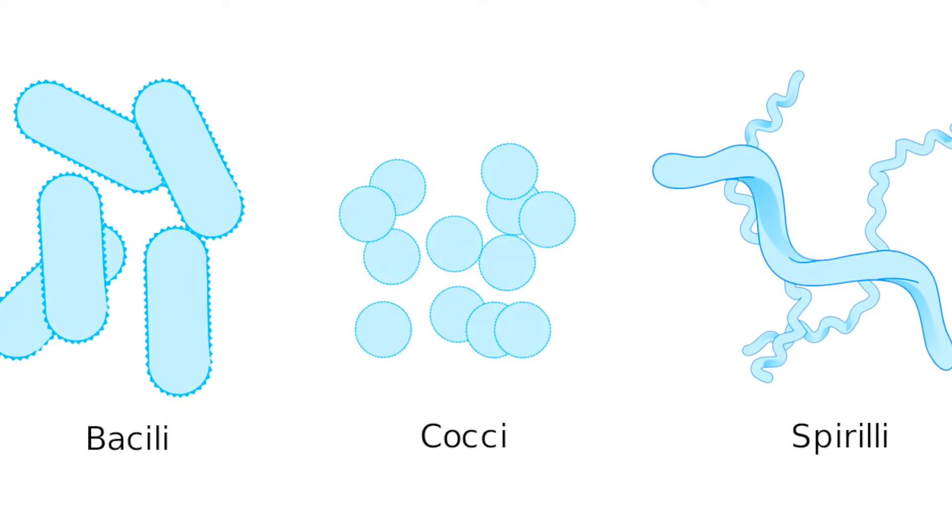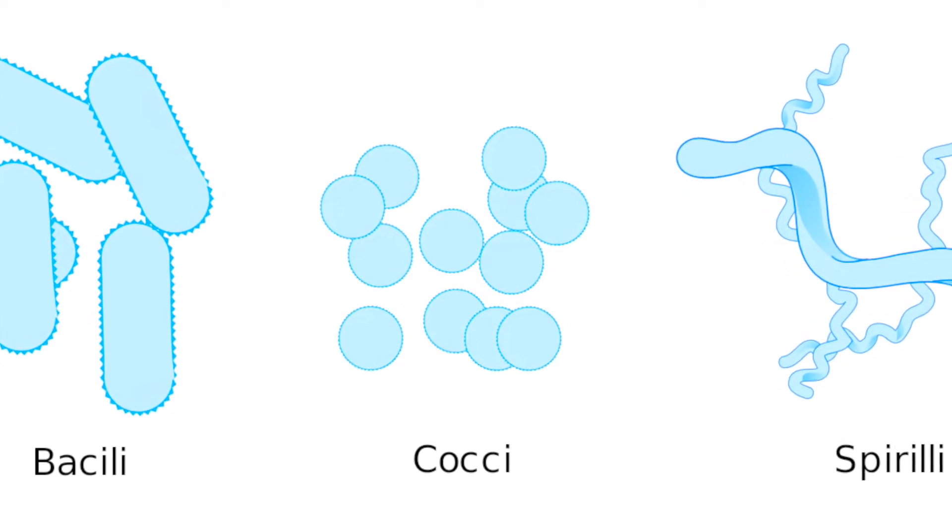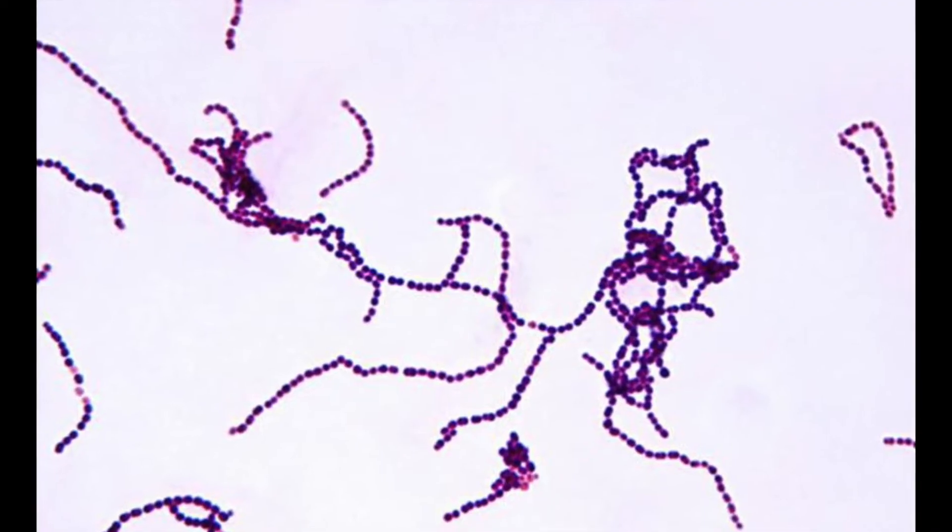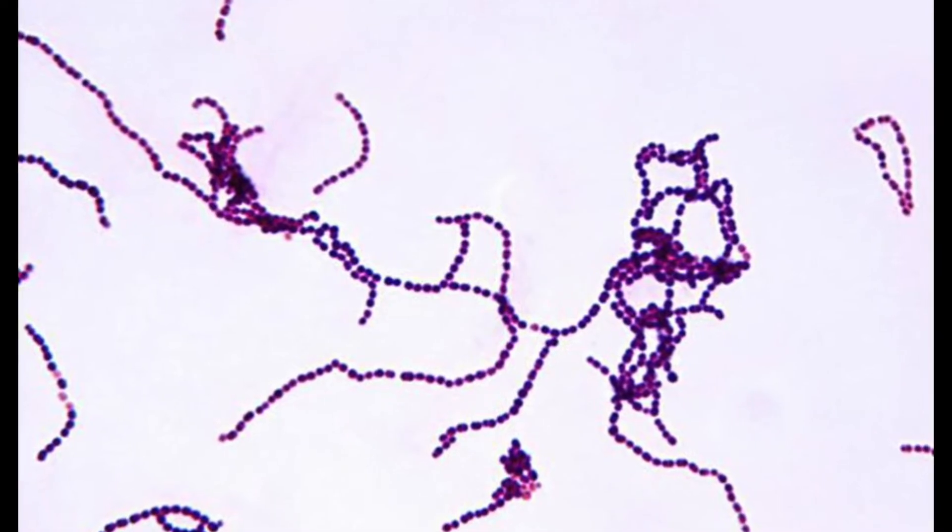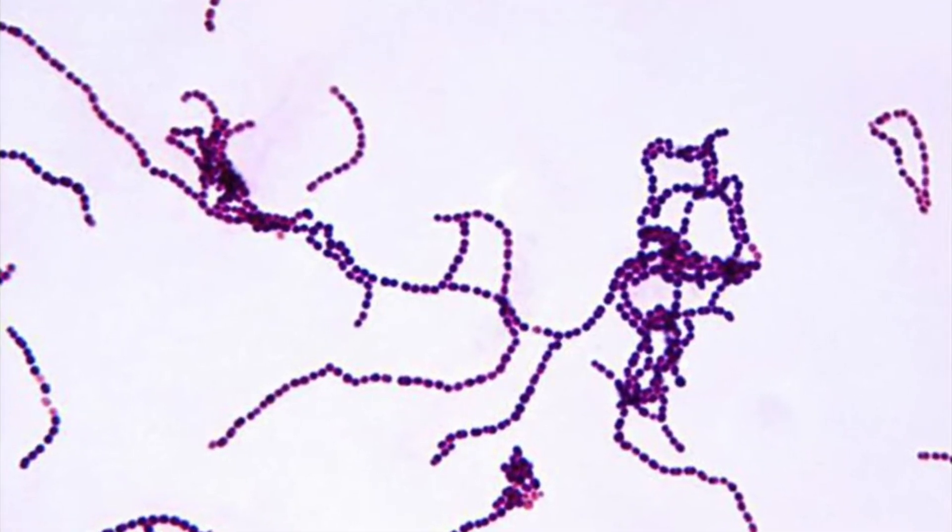Staphylococci and Streptococci are both round in shape, known as cocci. Streptococci form a chain of round cells because their division occurs in one linear direction, whereas Staphylococci divide in various directions, forming grape-like clusters.